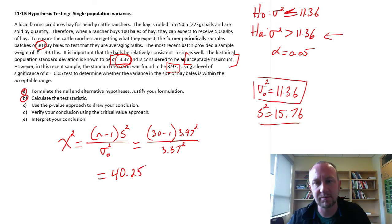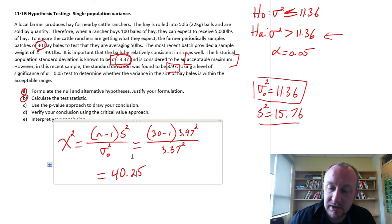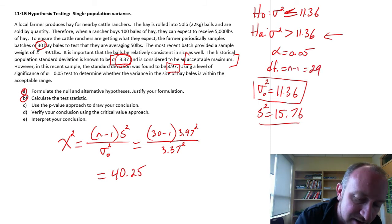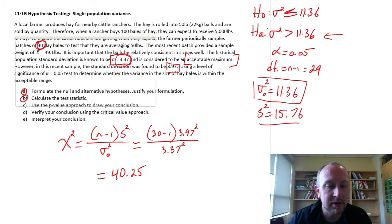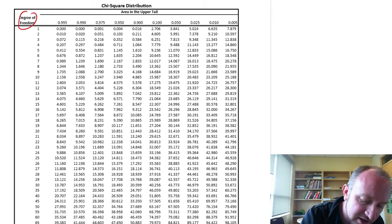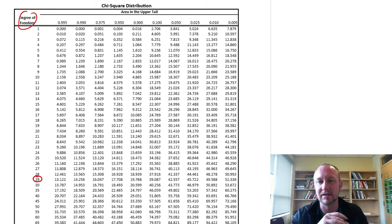So next step, as always, we go to our tables. In this case, this is a chi-squared distribution. We need to go to our chi-squared tables. We need to know degrees of freedom, still n minus 1. So in this case, it's 29. It's 30 minus 1. So we go to our chi-squared, first column, degrees of freedom. Down here, we have 29 degrees of freedom.